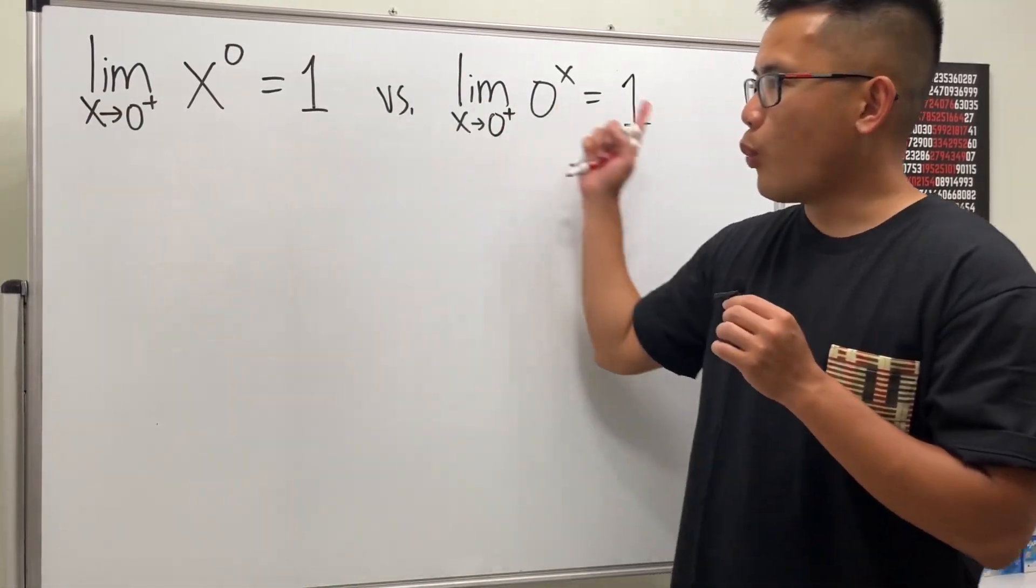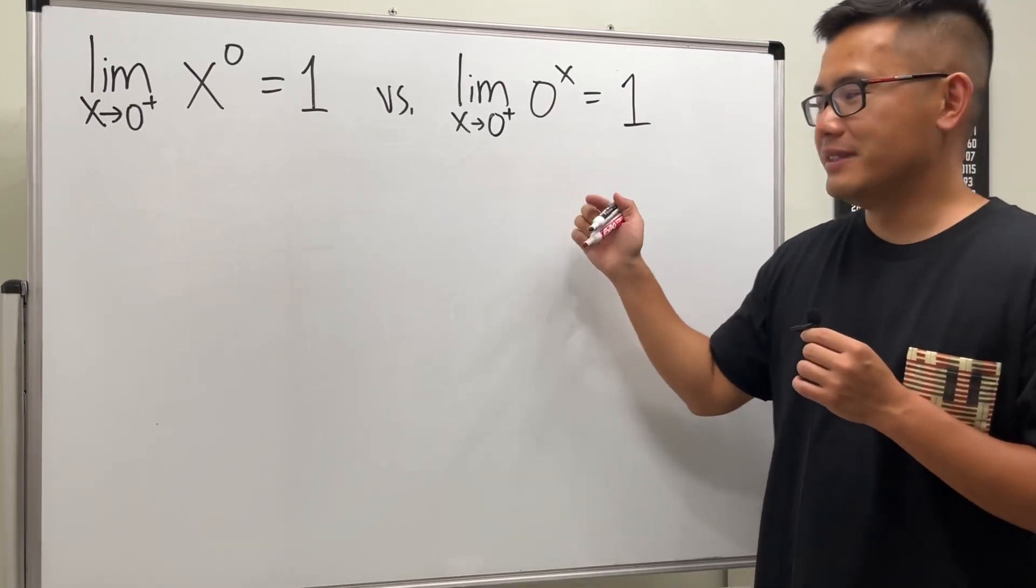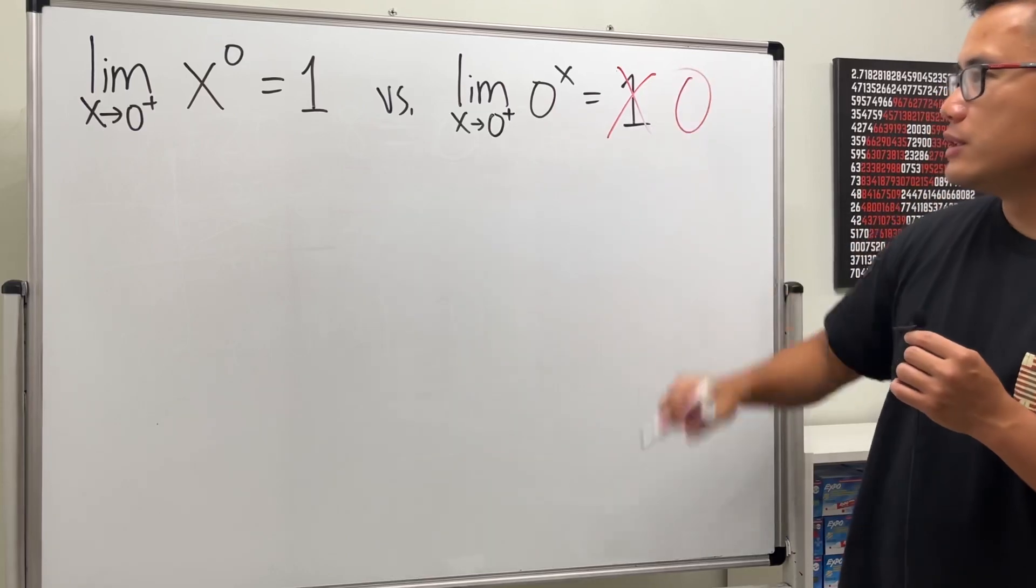I have a question for you guys. Which one is wrong? Give you guys five seconds. Five, four, three, two, one. The answer is that this right here is wrong. The answer is actually zero.